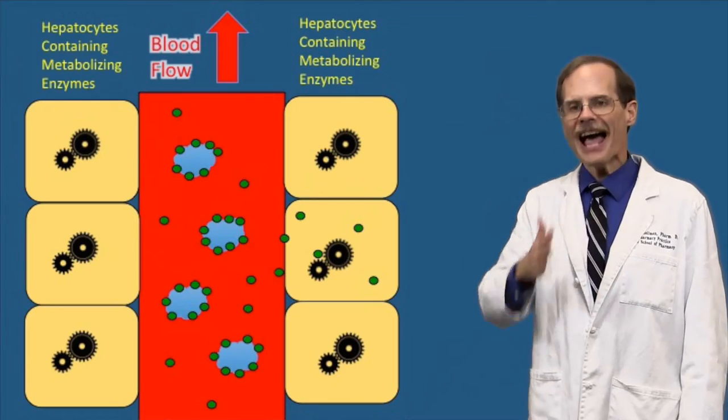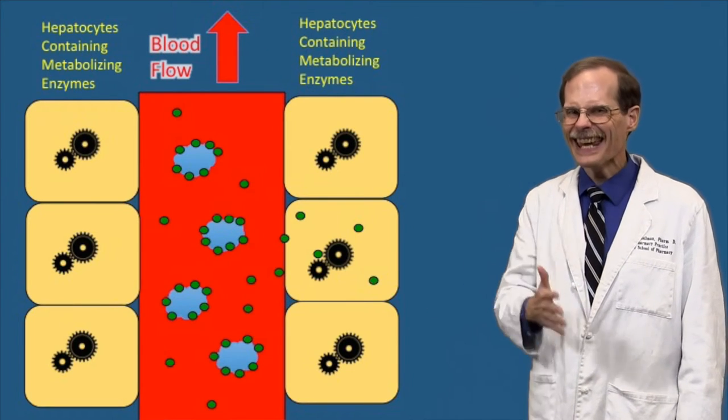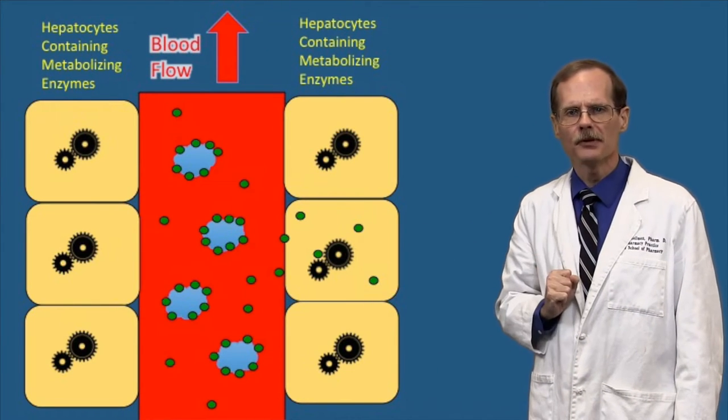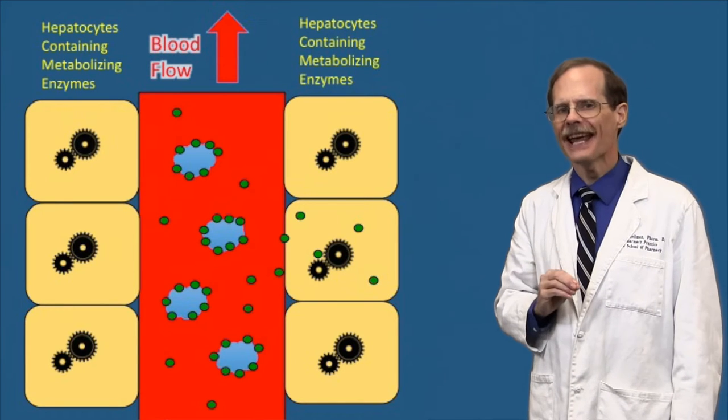When the drugs travel through the liver, the drug molecules that are bound to proteins aren't metabolized. It's only the drug molecules that are floating around unbound that can be removed by the liver. The bound drugs can't diffuse across the hepatocyte membranes to reach the liver enzymes that metabolize them.